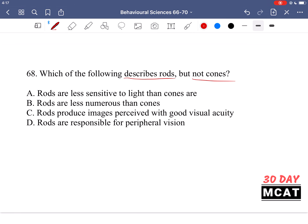Option A is saying rods are less sensitive to light than cones are. This is incorrect because rods are actually more sensitive. So at night, your cones can't really pick up light. Like if it's at night and it's dark in your room, your cones can't really pick up light. Whereas your rods, which are more sensitive, they need fewer photons to be excited. Those can pick up light.